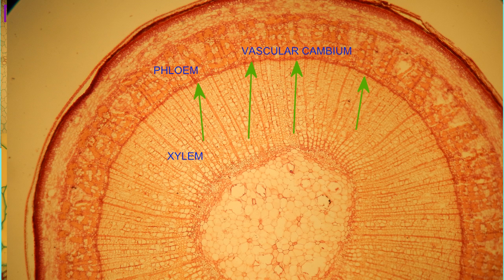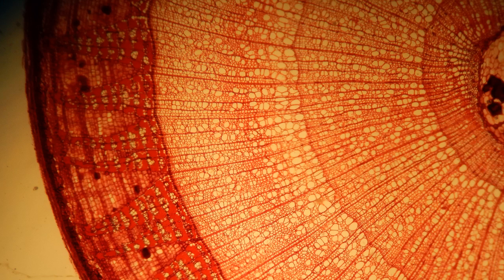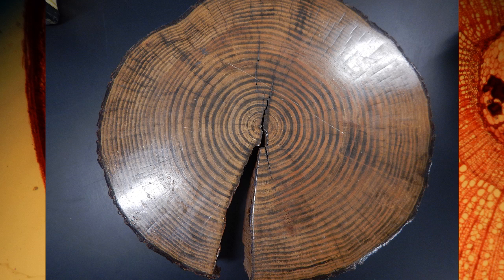In a woody tree, almost the entire trunk is composed of secondary growth produced from the vascular cambium. Only dicots produce this vascular cambium, allowing secondary growth.